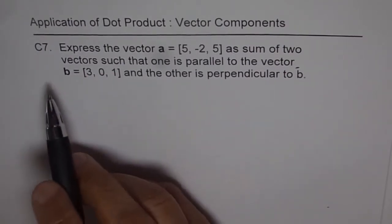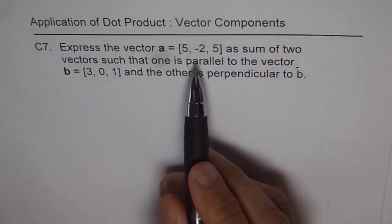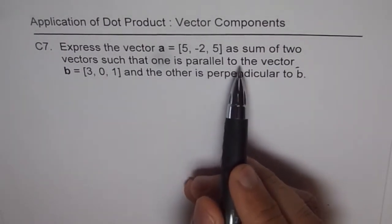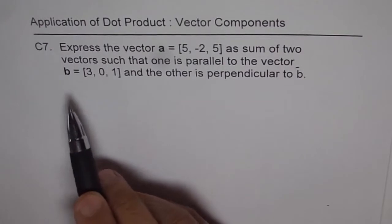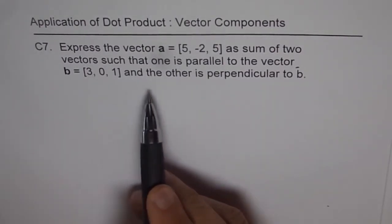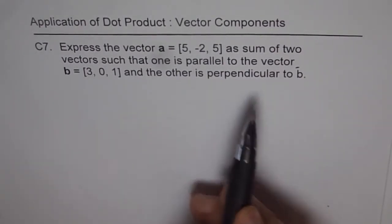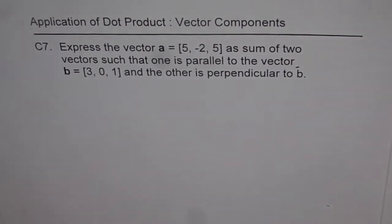Question C7: Express the vector a = [5, -2, 5] as sum of two vectors, such that one is parallel to the vector b = [3, 0, 1], and the other is perpendicular to vector b.